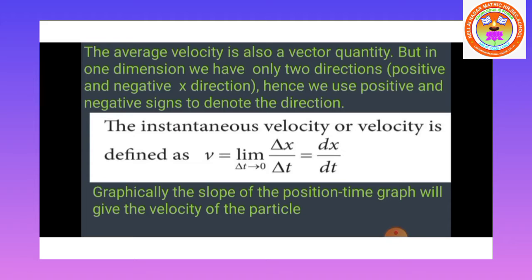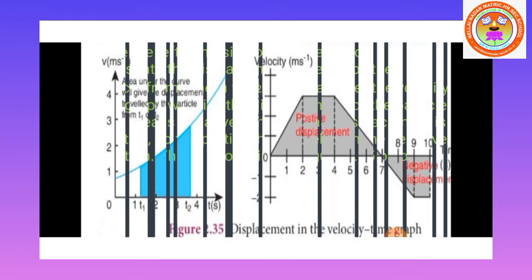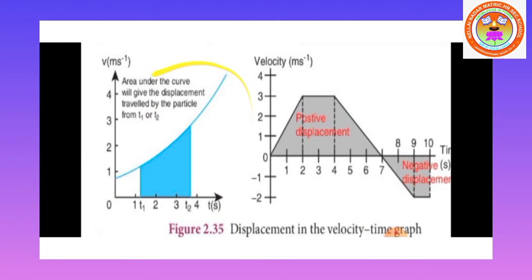Hence we use positive and negative signs to denote the direction. The instantaneous velocity, or velocity, is defined as v = lim(Δt→0) Δx/Δt, which is also equal to dx/dt. Graphically, the slope of the position-time graph gives the velocity of the particle, as shown in figure 2.35.